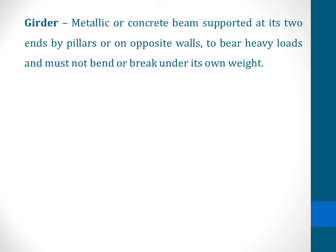In order to understand the speciality behind the I-shaped girder, we need to first know what is meant by a girder. A girder is a metallic or concrete beam supported at its two ends by pillars or on opposite walls to bear heavy loads, and it must not bend or break under its own weight.